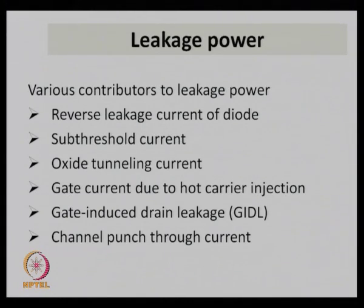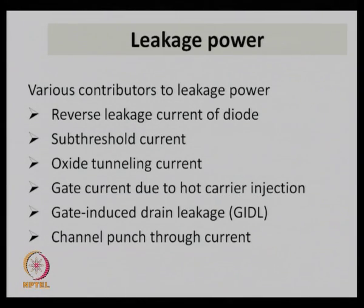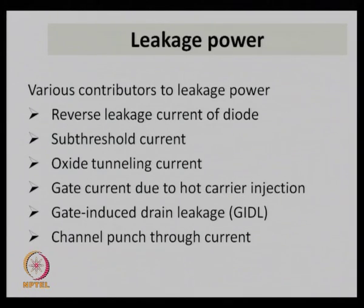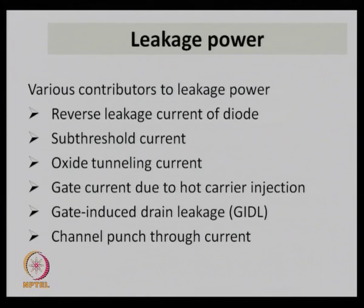The third contributor is oxide tunneling current. As technology scales down, the oxide thickness in MOS has thinned so much that carriers can tunnel through this thin oxide due to the large vertical electric field. The fourth is hot carrier injection: in nanometer technologies, the electric field at the drain end is so high due to current crowding that carriers can get injected across the gate.